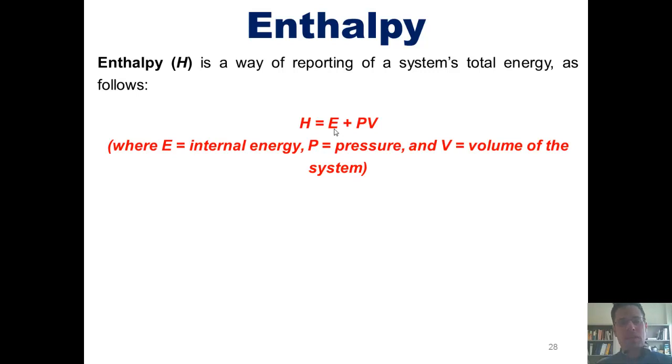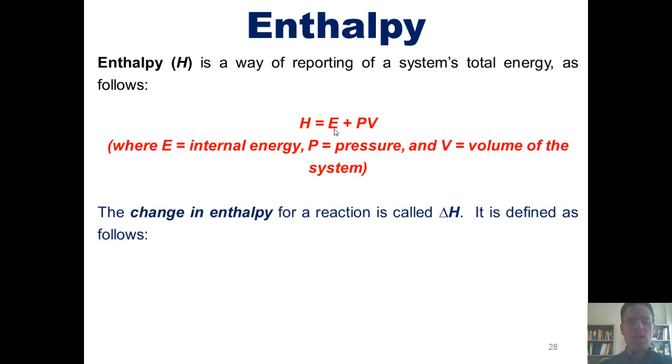But there's still more to be said about enthalpy. The change in enthalpy for a reaction is called delta H. It is defined mathematically as delta H, the total change in enthalpy for a system, equals the final enthalpy minus the initial enthalpy. Or it can also be expressed as delta H equals the enthalpy of the products minus the enthalpy of reactants.